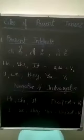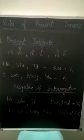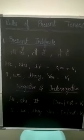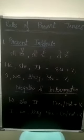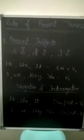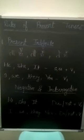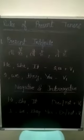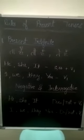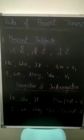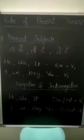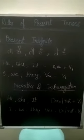Here are the rules of present tenses. Present tenses are of four kinds. The first one is present indefinite. How can we identify that a sentence is present indefinite?